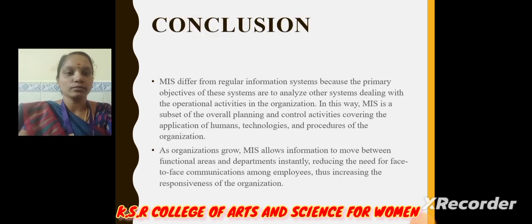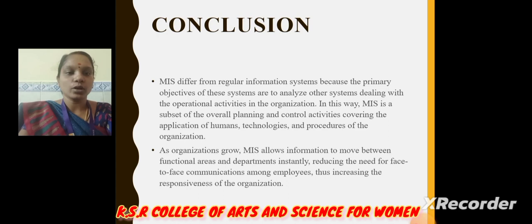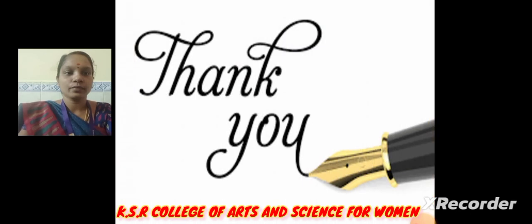Conclusion: MIS differs from a regular information system because the primary objective of these systems is to analyze other systems dealing with the operational activities in the organization. In the organization, MIS allows information to move between functional areas and departments instantly, reducing the need for face-to-face communication among employees, thus increasing the responsiveness of the organization. Thank you.